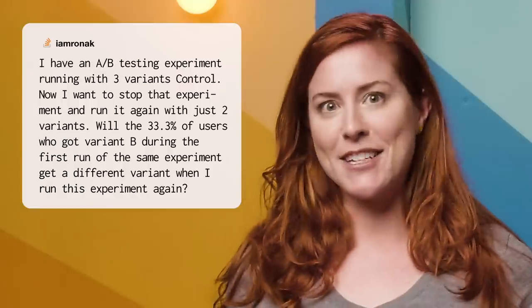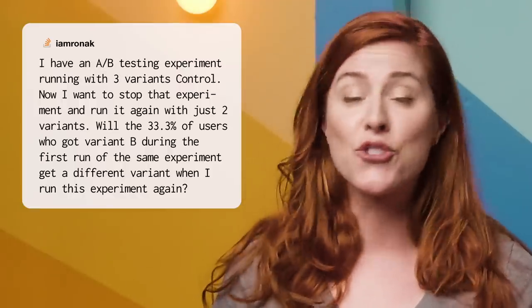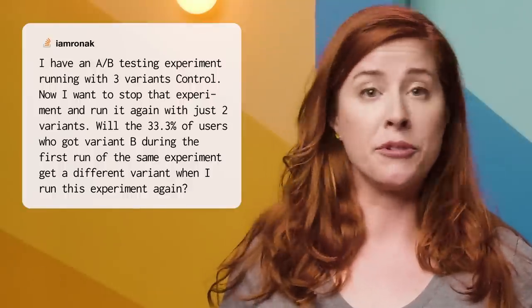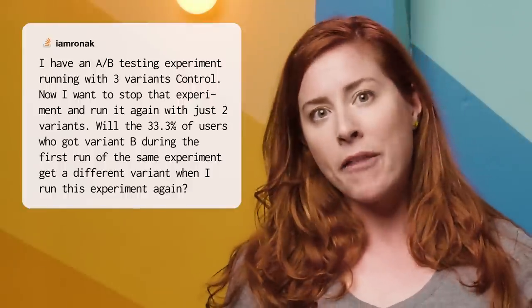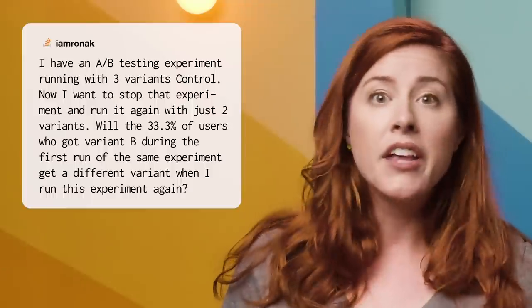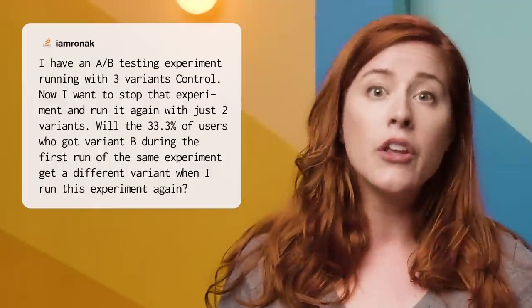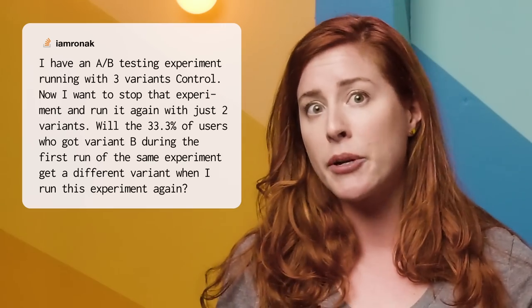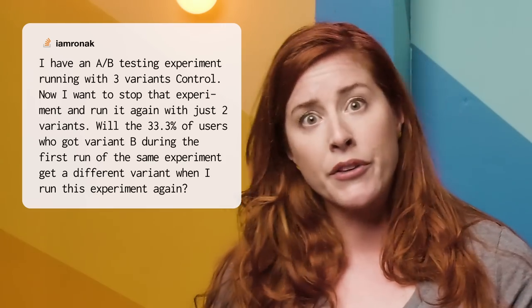I am Ronak. I have an A-B testing experiment running with three variants — Control, Variant A, and Variant B — at 33.3% distribution for each. Now I want to stop that experiment and run it again with just two variants, Control and Variant B, at 50% distribution for each. My question is: will the 33.3% of users who got Variant B during the first run get a different variant when I run this experiment again? Good question. In short, no.